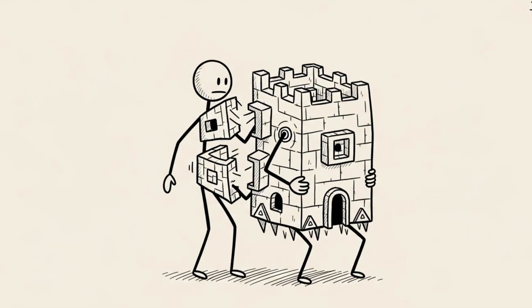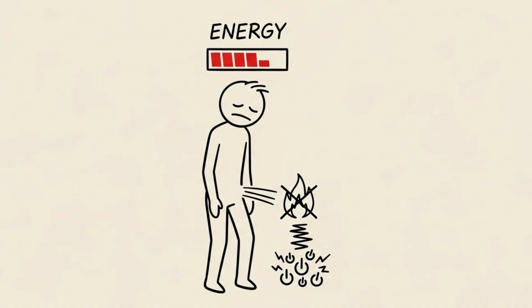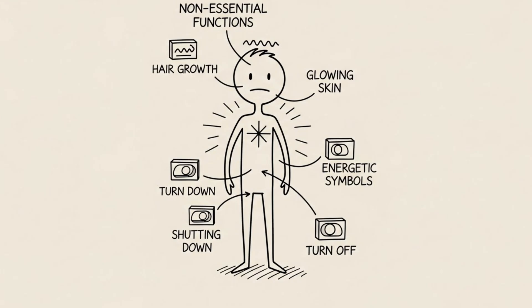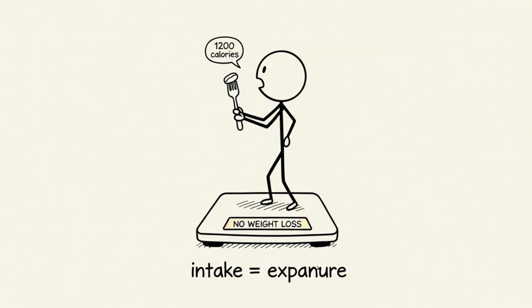Your body is a survival machine. When energy intake drops too low for too long, your body doesn't burn fat. It conserves energy. It down-regulates your thyroid. It lowers your body temperature. And it stops non-essential functions to keep you alive. You enter a state where you are eating 1,000 calories but not losing weight because your body has adjusted your expenditure down to match it.